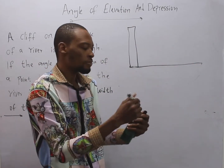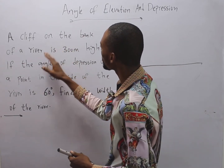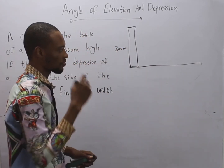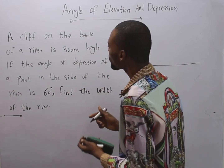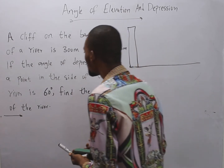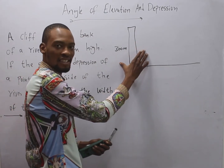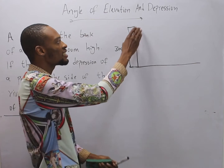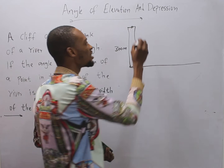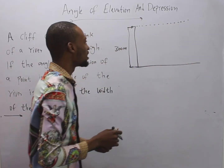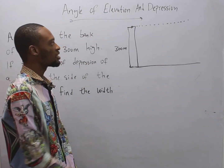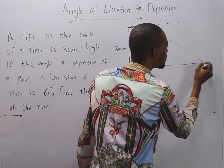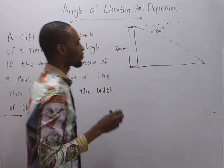They're telling you that on the bank of the river, the cliff is 300 meters high — so this cliff height is 300 meters. Now this is the end of the river. They say the angle of depression of a point on the side of the river is 60 degrees. The eye is looking normally along the horizontal, then looks downward at an angle of 60 degrees to the end of the river. So this angle is 60 degrees.